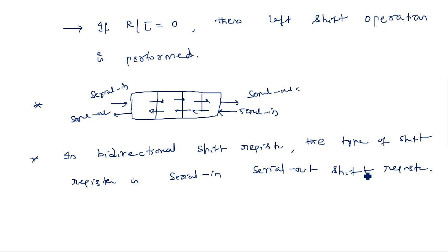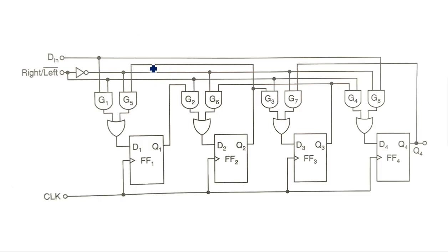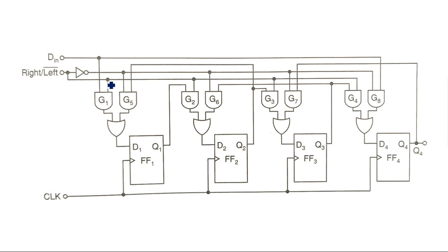Now let us see the logic diagram of this bi-directional shift register. The operation is simple but it looks somewhat bigger because in order to perform both right shift and left shift operations, we need additional circuitry — AND gates followed by OR gates. Every flip-flop has two AND gates and one OR gate, so eight AND gates and four OR gates are needed in total.